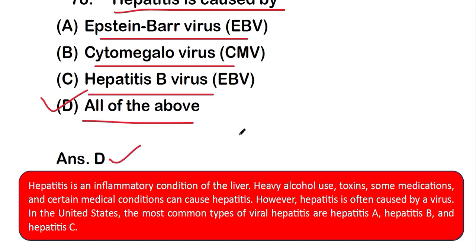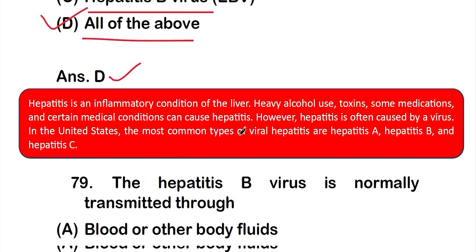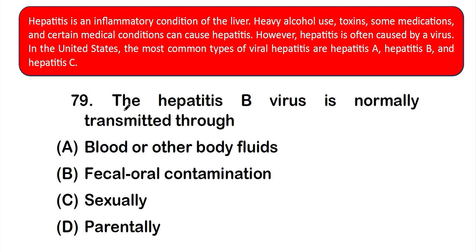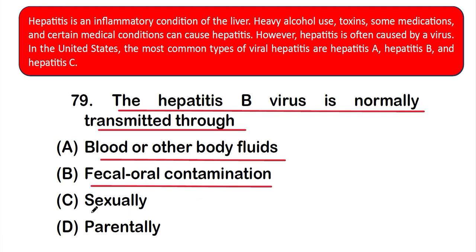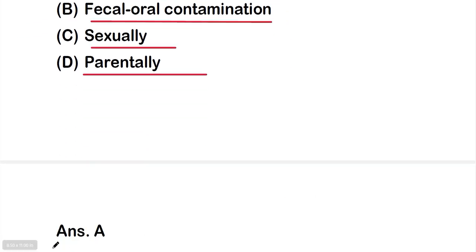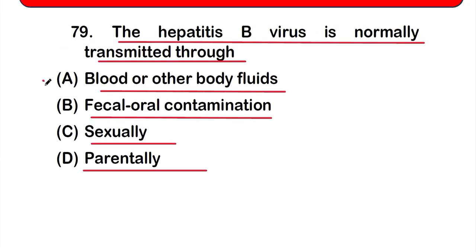Question number 79: The hepatitis B virus is normally transmitted through — option A: blood or other bodily fluids, option B: fecal-oral contamination, option C: sexually, or option D: parenterally. The correct answer is option A — hepatitis B virus is normally transmitted through blood or other body fluids.